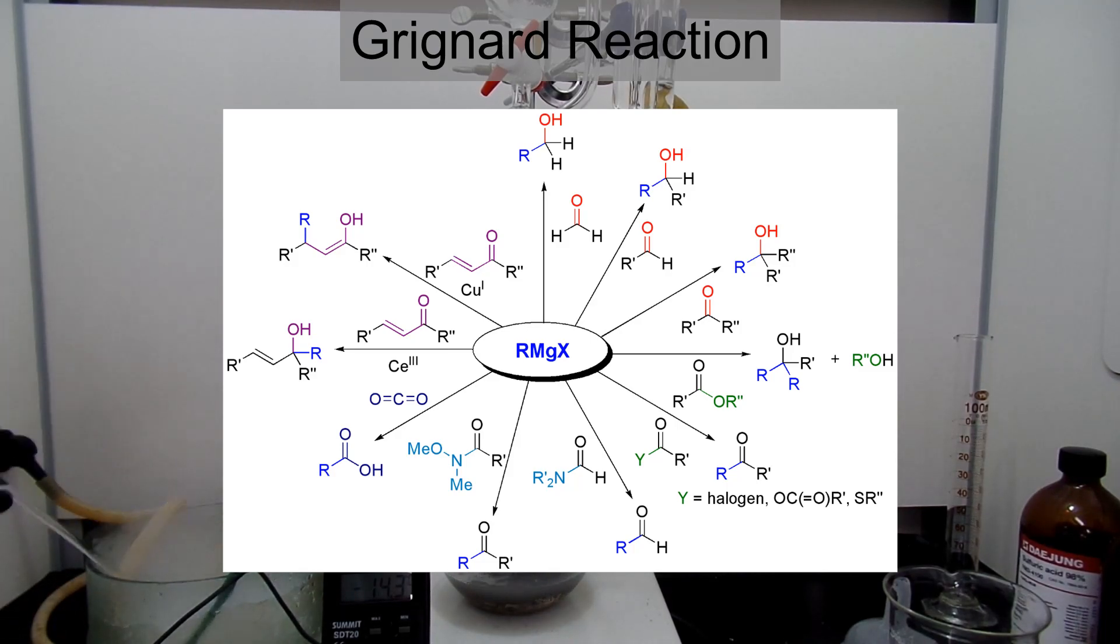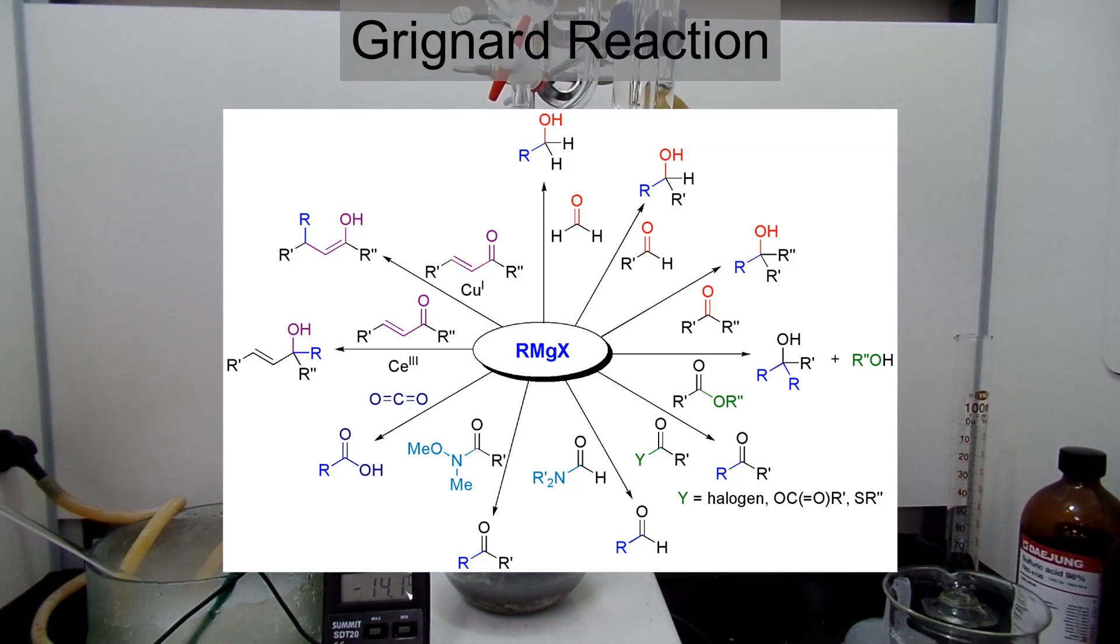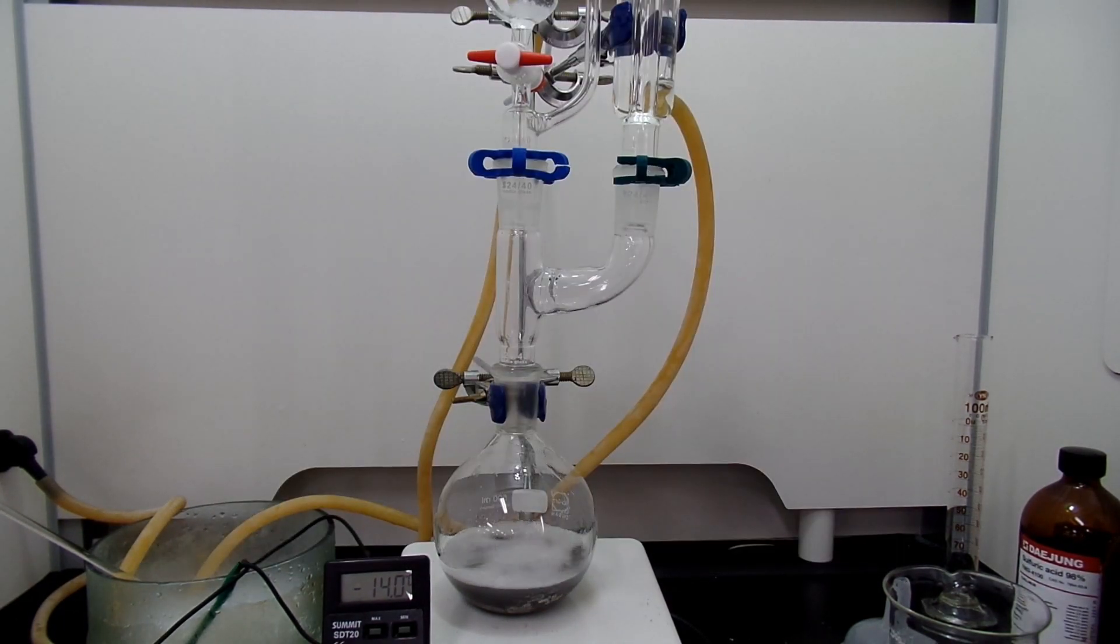Grignard reaction, according to Wikipedia, is an organometallic chemical reaction where alkyl, phenyl, or aryl magnesium halide, which is a Grignard reagent, adds to the carbonyl group of an aldehyde or ketone. This reaction is extremely useful for formation of carbon-carbon bonds. This reaction was named after the French chemist Victor Grignard, who invented this reaction.